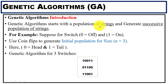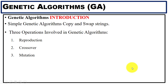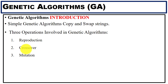With the initial population of strings we can further generate successive populations. There are three operations involved in genetic algorithms: reproduction, crossover, and mutation. Simple genetic algorithms just copy and swap strings. We will now see each operation one by one.